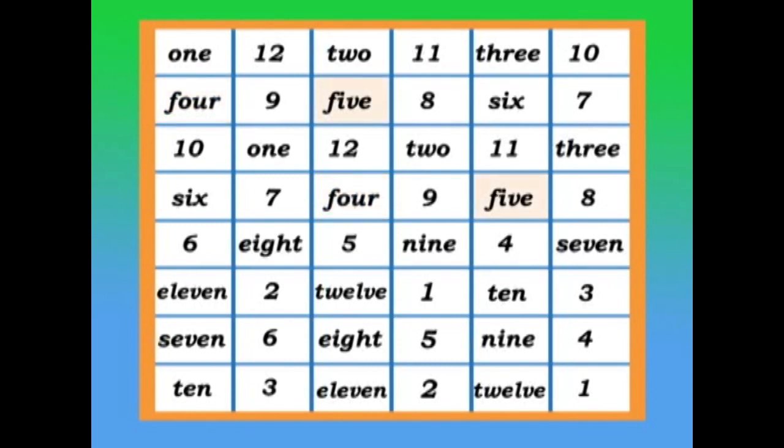Five. How many letters does the word five have? That's right. Four. F-I-V-E. So four and five have four letters.